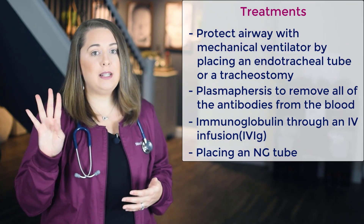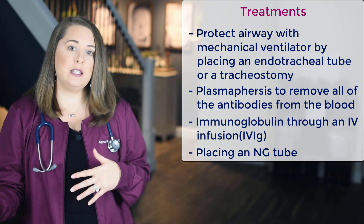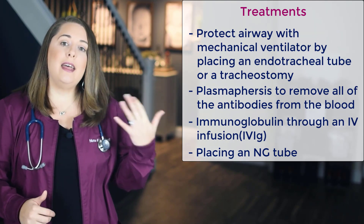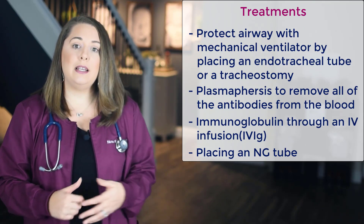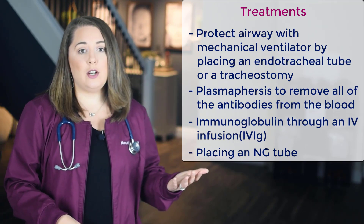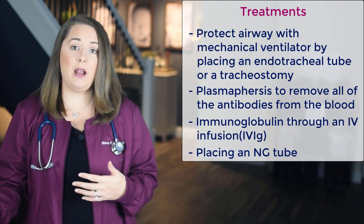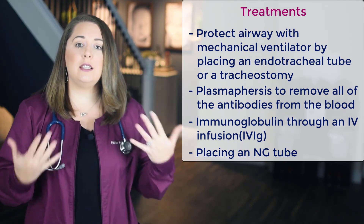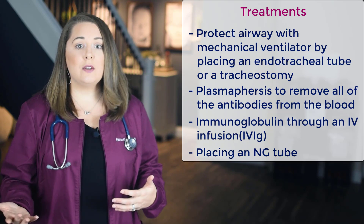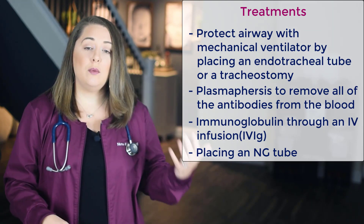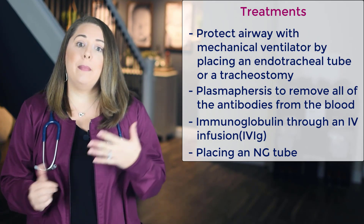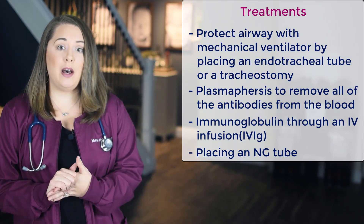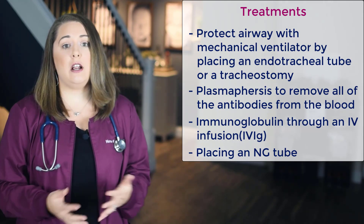There are four main treatments after confirming the diagnosis of GBS. Treatment number one: protect the airway by monitoring respirations closely. The physician will likely place the patient on a mechanical ventilator with either an endotracheal tube or a tracheostomy if longer-term airway management is anticipated — which from experience is usually the case. It's always better to be proactive and secure an airway before the patient loses it. These patients typically need months of recovery, usually in an acute rehab facility.